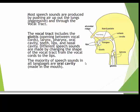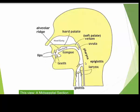Different speech sounds are made by changing the shape of the vocal tract from the vocal cords to the lips. The majority of these speech sounds in all languages are produced in the mouth or the oral cavity. Here's a larger image of the vocal tract, and we'll be talking about these different features inside the oral cavity that enable speech to be produced.